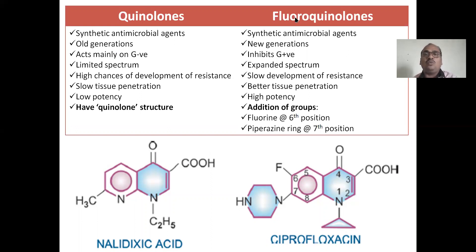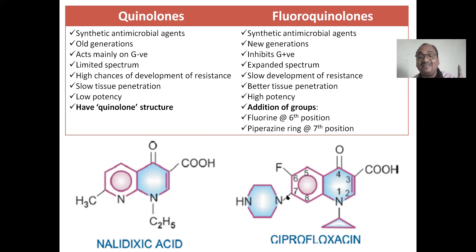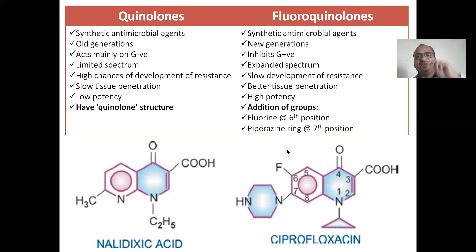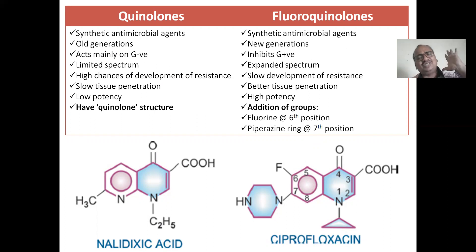Now, fluoroquinolones — the name itself indicates fluoro, meaning fluorine addition of groups. What groups? Fluorine groups at the sixth position. At the sixth position we have added a fluorine. At the seventh position we have added a piperazine ring. Pipe plus ring — piperazine ring at the seventh position. So then you can say it is a fluoroquinolone. Ciprofloxacin is a very, very excellent example of fluoroquinolones — FQ in short form.